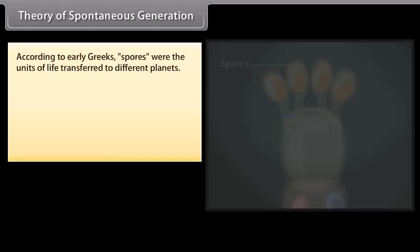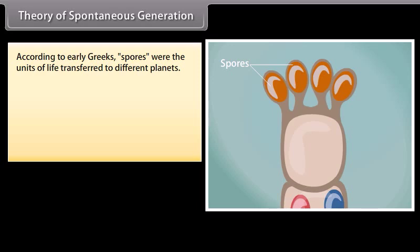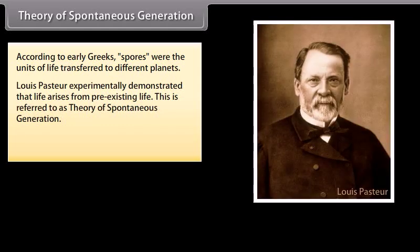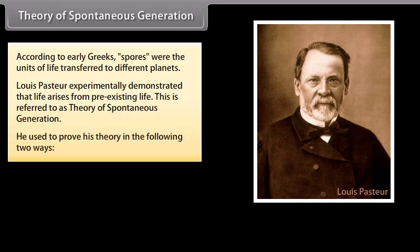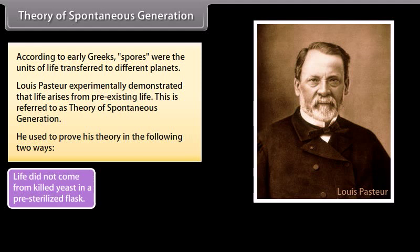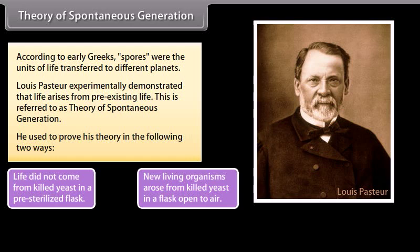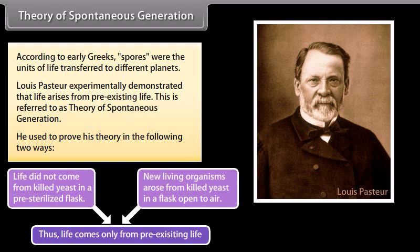Theory of Spontaneous Generation: According to early Greeks, spores were the units of life transferred to different planets. Louis Pasteur experimentally demonstrated that life arises from pre-existing life; this is referred to as the Theory of Spontaneous Generation. He proved his theory in two ways: life did not come from killed yeast in a pre-sterilized flask, but new living organisms arose from killed yeast in a flask open to air. Thus, life comes only from pre-existing life.